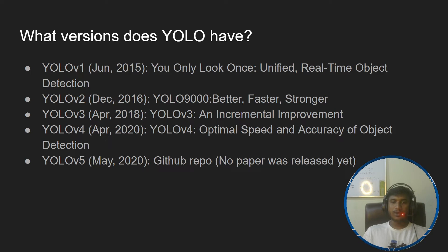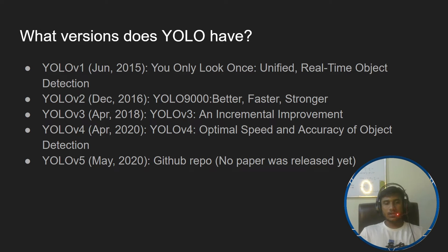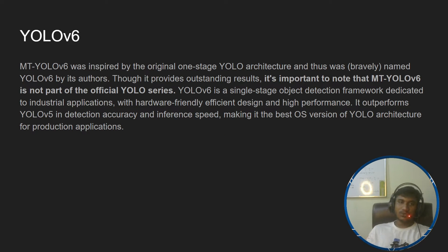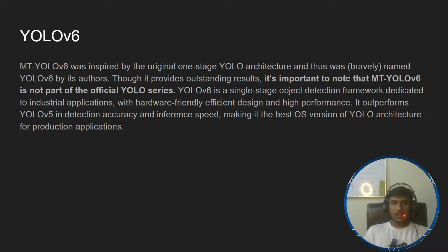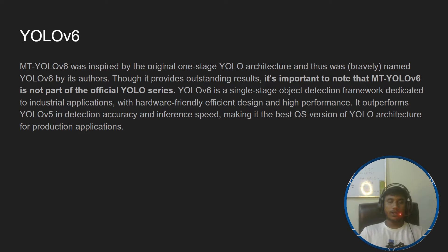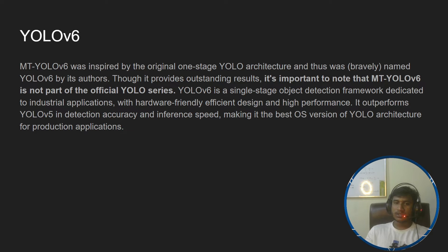In 2020, they achieved optimal speed and accuracy with YOLOv4. Also in 2020, the famous YOLOv5 came to market — it didn't have an associated paper, it was just a GitHub repository from Ultralytics. In 2022, YOLOv6 was inspired by the original single-stage YOLO architecture. One important note: YOLOv6 is not part of the official YOLO series. It is a single-stage detection framework dedicated to industrial applications, with hardware-friendly efficient design and higher performance. It outperforms YOLOv5 in detection accuracy and inference speed.